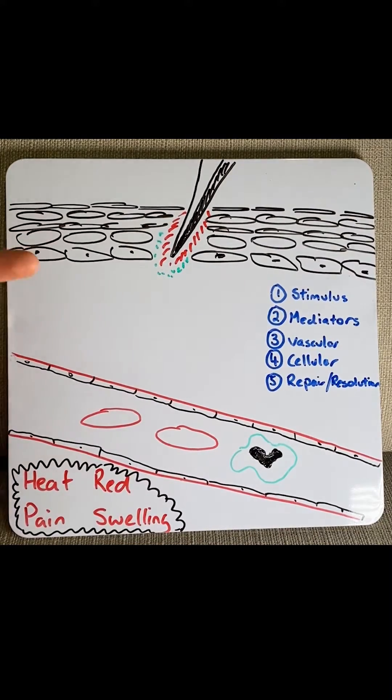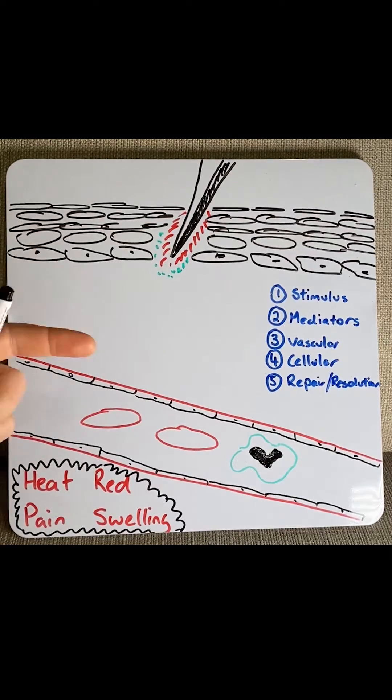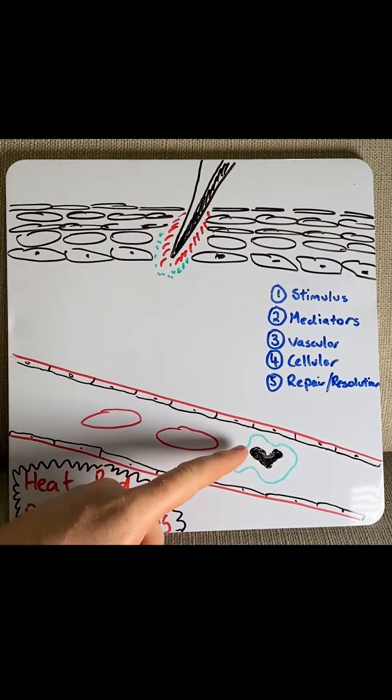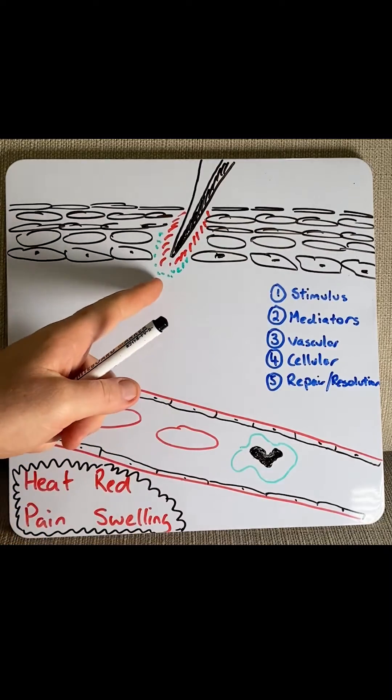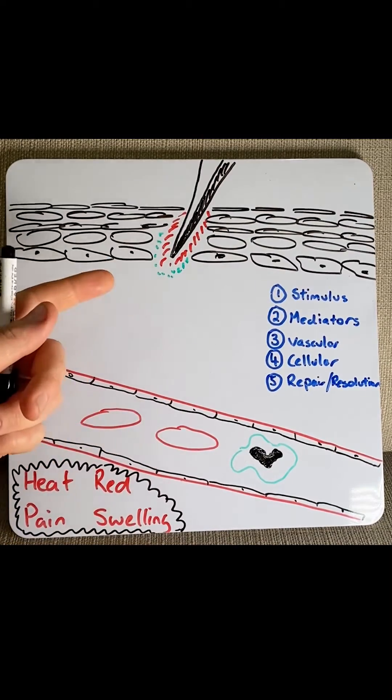Acute inflammation is a response of vascularized tissue, tissue with blood vessels, to damage or infection that brings immune cells from the neighboring blood vessels to the area of injury to lead to wound healing or resolution.